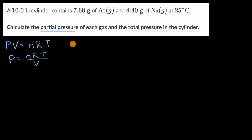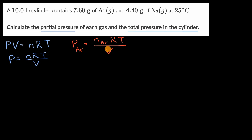We can use this to figure out the partial pressure of each gas. The partial pressure of argon is equal to the number of moles of argon times the ideal gas constant times the temperature, divided by the volume. Similarly, the partial pressure of molecular nitrogen equals the moles of molecular nitrogen times the ideal gas constant times temperature, divided by the volume.